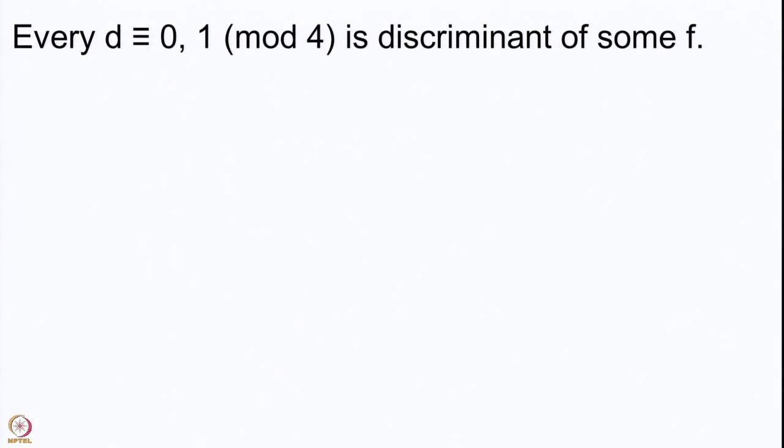The simplest question is whether every d congruent to 0 or 1 mod 4 is a discriminant of some form, because we would like to classify the integral binary quadratic forms by means of discriminant. Elements which are 0 mod 4 are multiples of 4, and elements which are 1 mod 4 look like multiples of 4 plus 1. Starting with these expressions, we will prove that every such d is the discriminant of some form f.